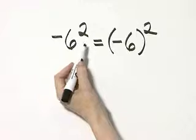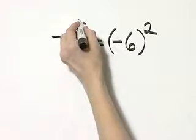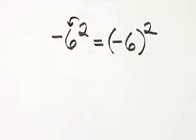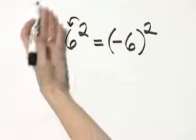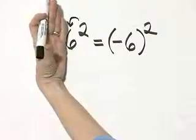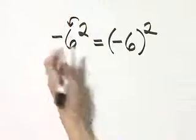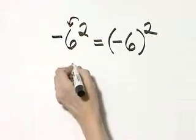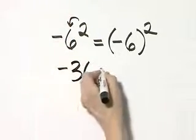On the left side, without parentheses, this 2 goes with a base of 6 only. So this is negative 6 times 6. 6 squared is 36. This is the opposite of 36. So the left side simplifies to negative 36.